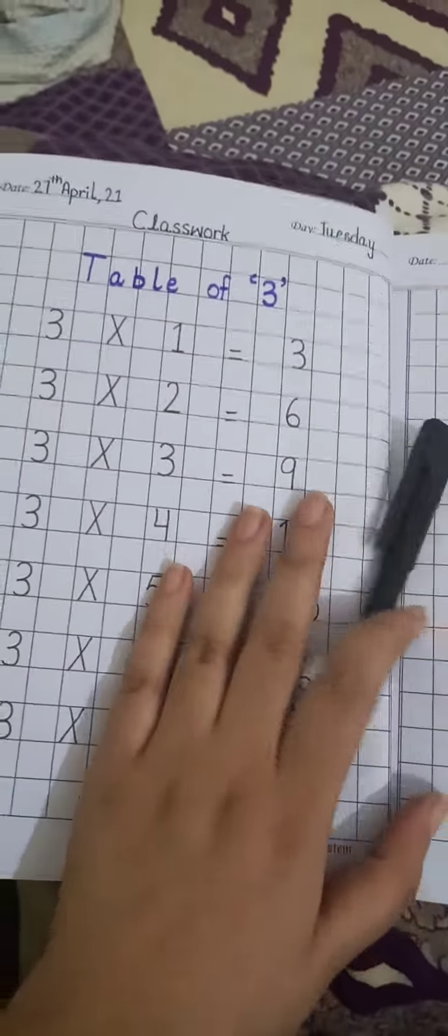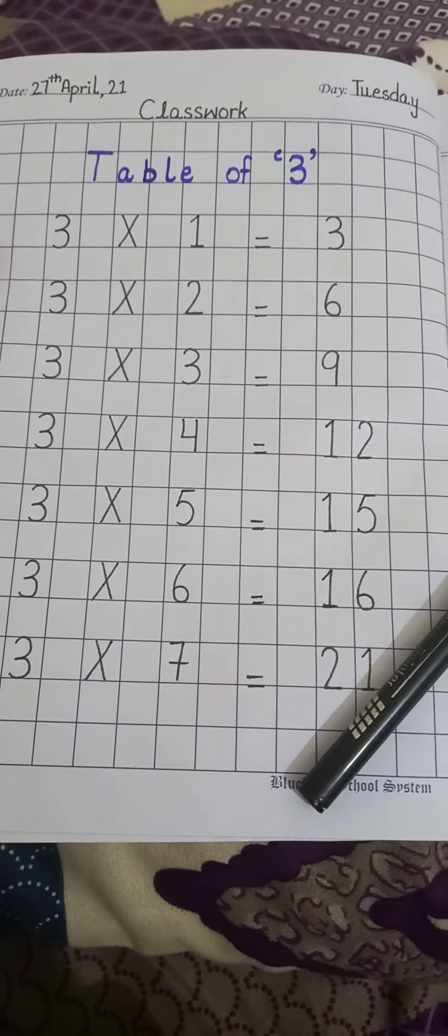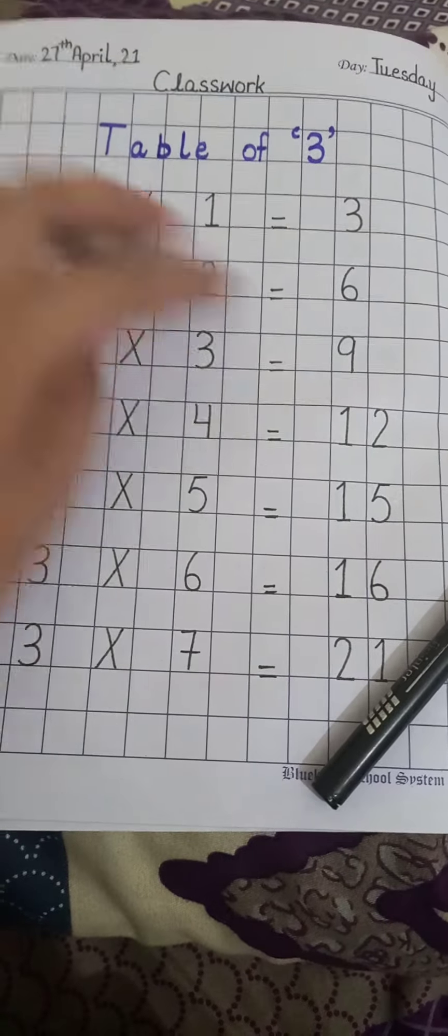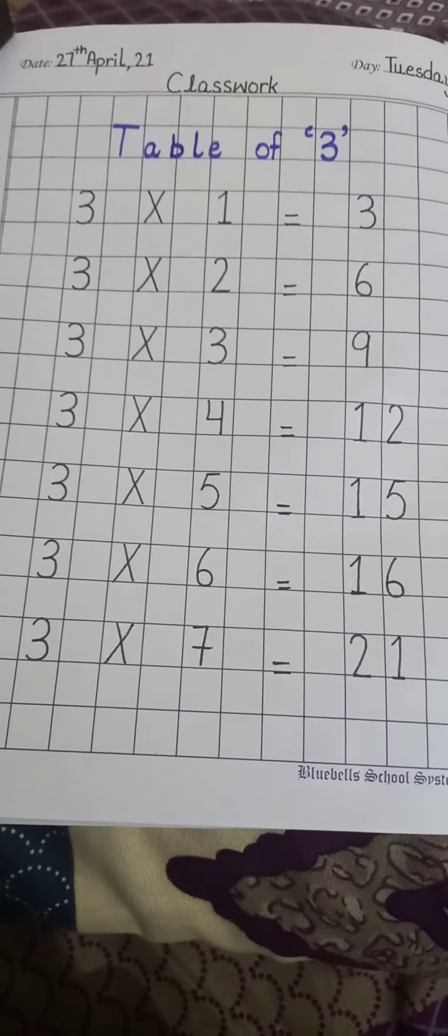Today we are going to start our table of three. First of all, write classwork, date, and day at the top of your page. Your date is 27th April, 21 and your day is Tuesday. Now write table of three. Your writing should be neat and clean.